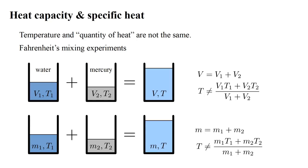Because mercury is so much denser than water, you could argue that the volumes are not useful measures of the relative amounts of material. Instead, you might use masses as weighting factors. But this also gives incorrect results for the final temperature.